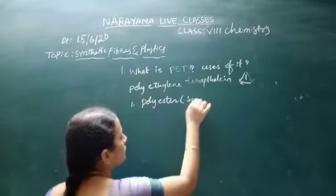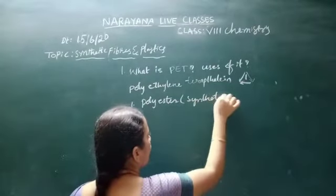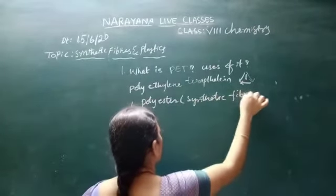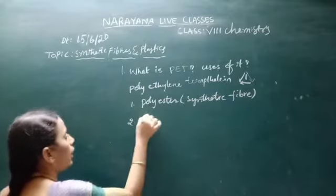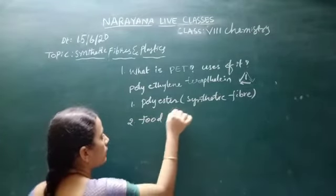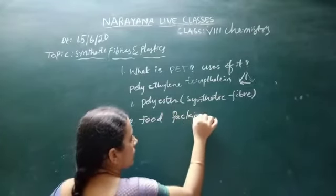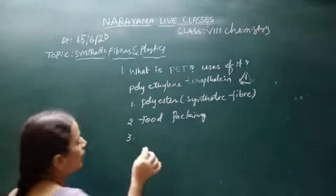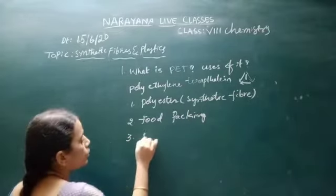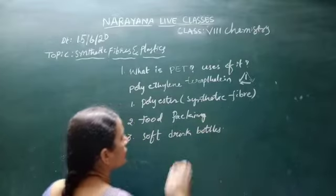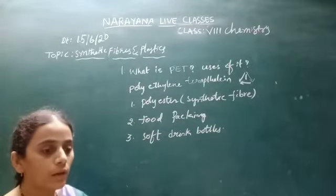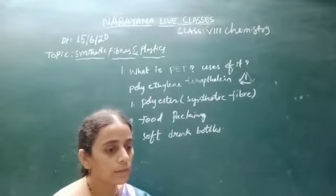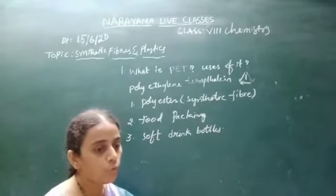So these are the major uses of PET: making soft drink bottles, food packaging, and polyester fiber. The next question is: what does code 4 indicate, and what are its uses?